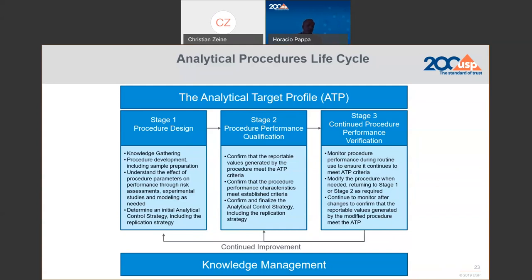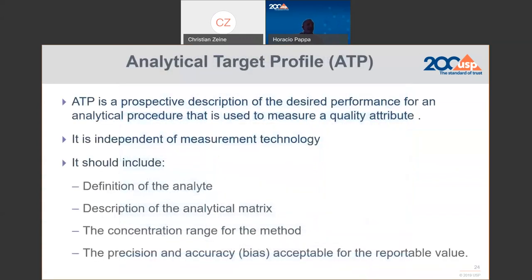The ATP—Analytical Target Profile—is a prospective description of the desired performance for an analytical procedure used to measure a quality attribute. So when you plan a method for measuring a particular attribute of a product, you will define, based on specifications and the therapeutic window of the product, what is the necessary quality of the reportable value, and based on that you will create the ATP. When you create the ATP, you will define what is the most appropriate technology for measuring that particular attribute.